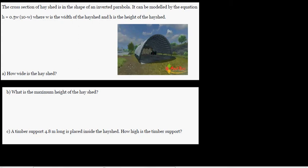The cross-section of a hayshed is in the shape of an inverted parabola. It can be modeled by this equation: H equals 0.5W times 10 minus W, where W is the width of the hayshed and H is the height of the hayshed.